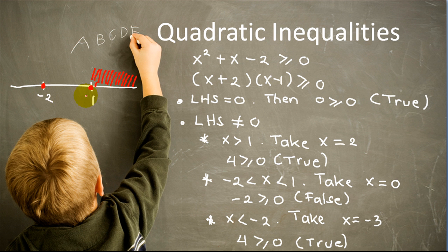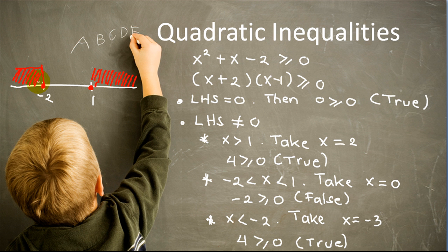That tells us that x greater than 1 is part of the solution. Now let's check for x between negative 2 and 1. Pick any number such as 0 and plug in. We get negative 2 is greater or equal to 0, which is a false statement. So x between negative 2 and 1 is not part of the solution. For x less than negative 2, take negative 3 and plug in. The left hand side equals 4, so 4 is greater or equal to 0, which is a true statement.